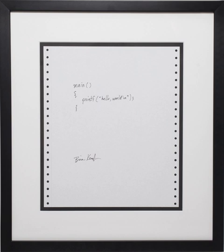The Manchester Baby was a stored program computer. Programming transitioned away from moving cables and setting dials; instead, a computer program was stored in memory as numbers. Only three bits of memory were available to store each instruction, so it was limited to eight instructions. Thirty-two switches were available for programming.